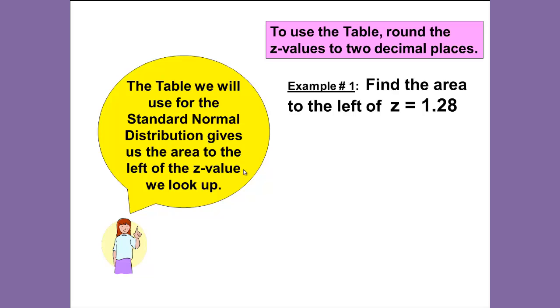We are now ready for example one: find the area to the left of Z equals 1.28.